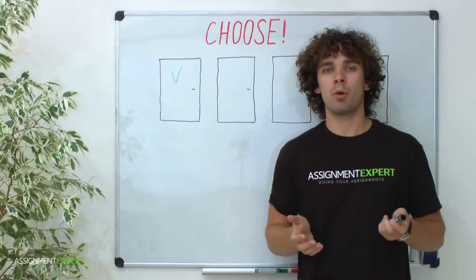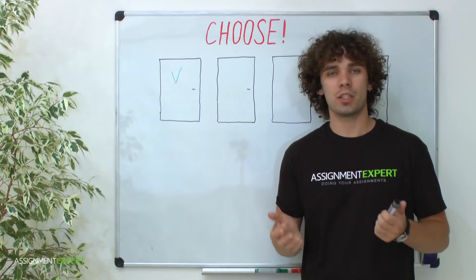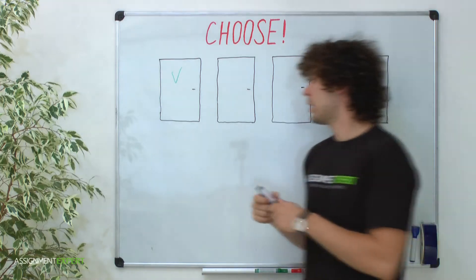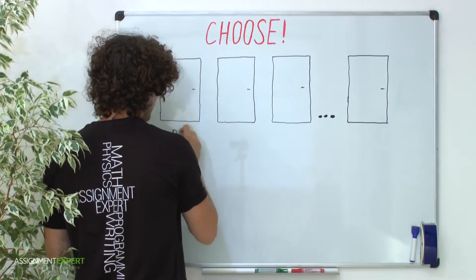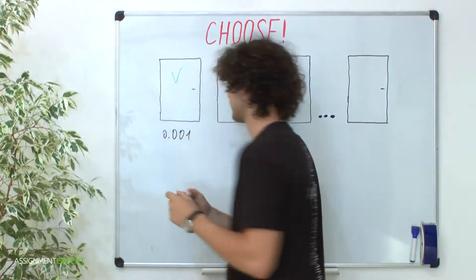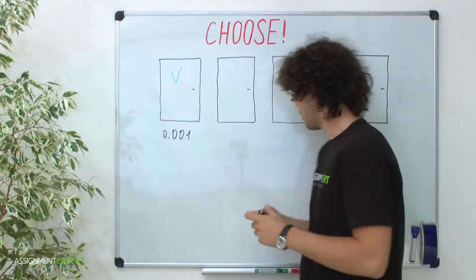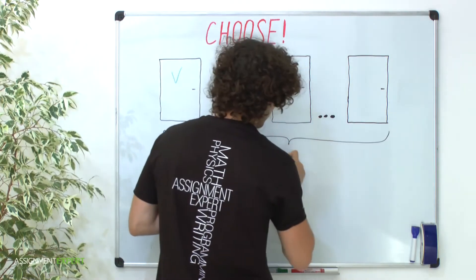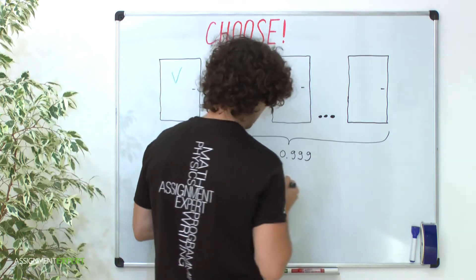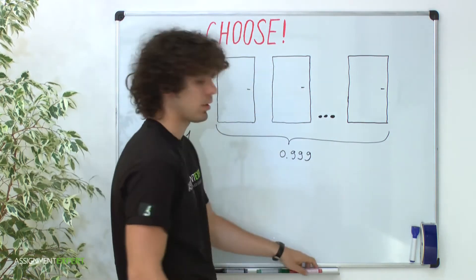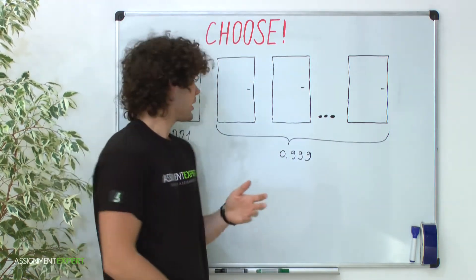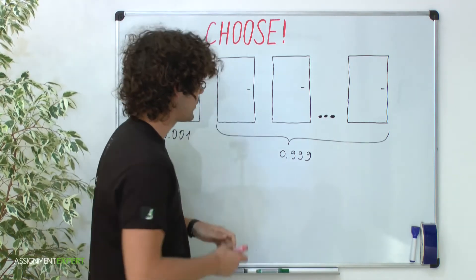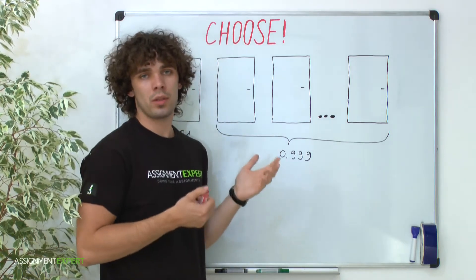It's even more obvious when we have a thousand doors instead of three, and we still have just one car. In this case, probability to win with each door is 0.001. Again you pick the first door. Therefore, all other doors combined give us probability 0.999. Then I open all the doors except the door you picked, and another door, let's save the second door. And we see that there are goats behind all these doors.